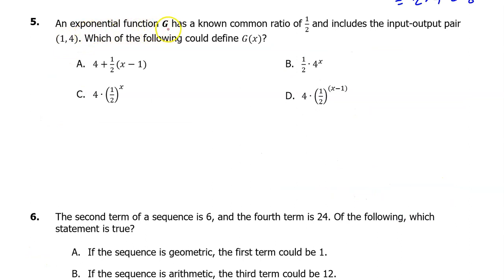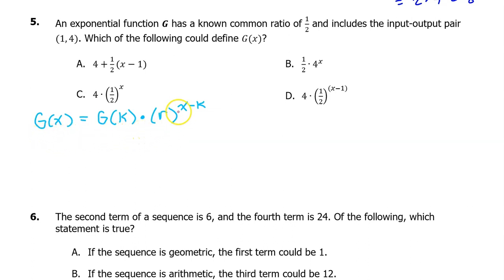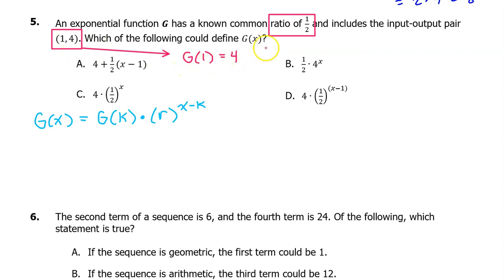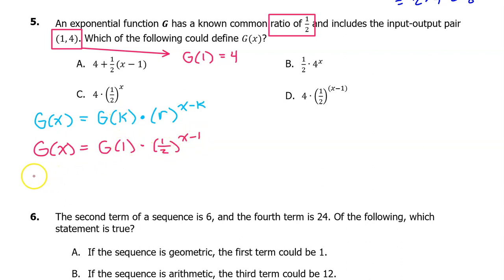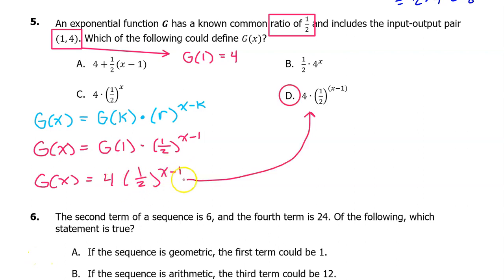Number 5. An exponential function G has a known common ratio of 1/2 and includes the input-output pair (1, 4). Which of the following could define G of x? Using G of x equals G of k times r to the x minus k power, the pair (1, 4) means G(1) equals 4, and r is 1/2. So G of x equals 4 times (1/2) to the x minus 1 power. The answer is D.